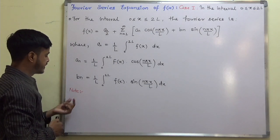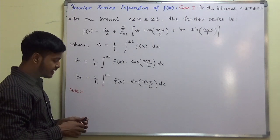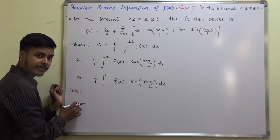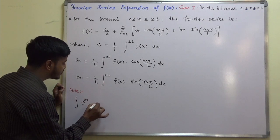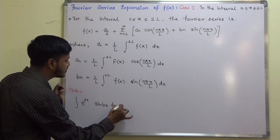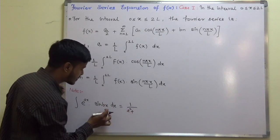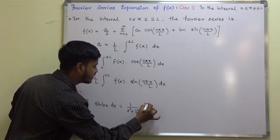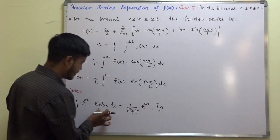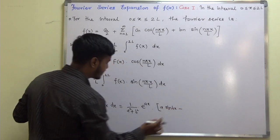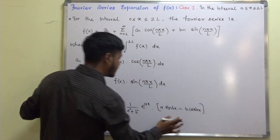The problem we are going to take in this learning video requires some integration. As a note, you might remember the formula: integration of e^(ax) · sin(bx) dx equals 1/(a² + b²) · e^(ax) · (a·sin(bx) − b·cos(bx)).